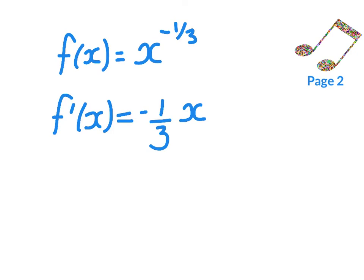1 is 3 thirds, and I already have negative 1 thirds. So if I take away another 3 thirds, I'm going to have negative 4 thirds.